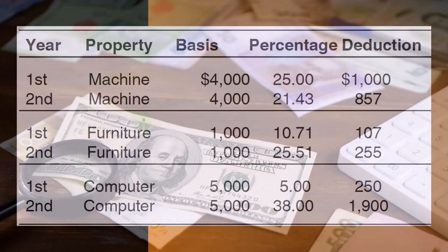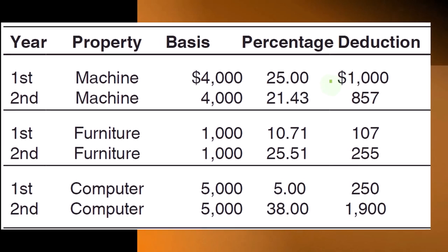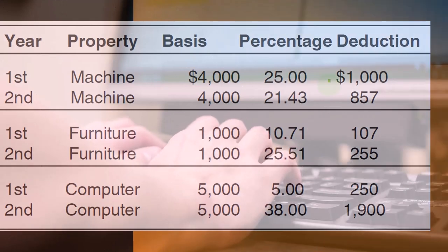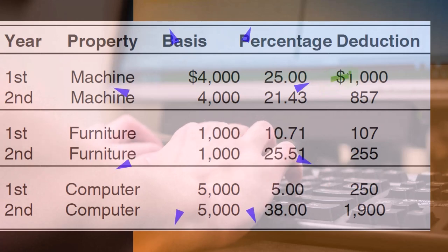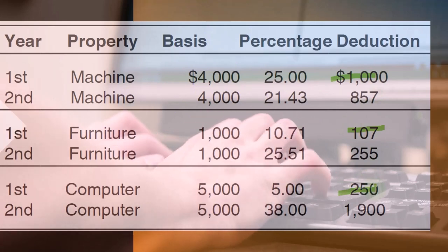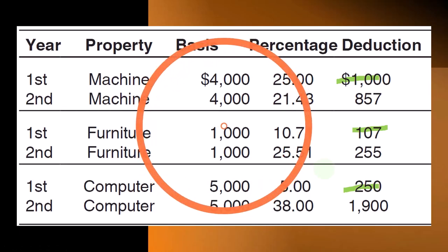For year one and two, the basis multiplied by the percentages in the tables gives us the depreciation deduction. If you plug this into software and input the data properly, it should determine whether to use half-year or mid-quarter convention, and you can double-check that against your tables. You might also use the tables to project further than two years out over the life of the property, once you've confirmed you have the right tables. We may do some practice problems with software in future presentations.